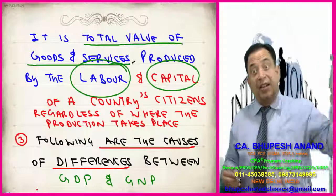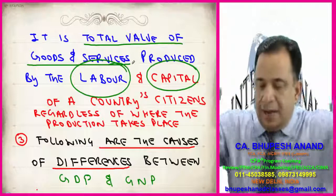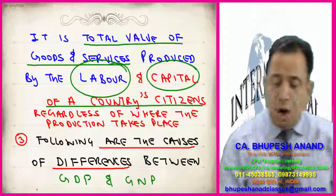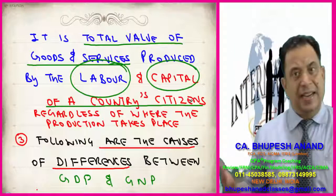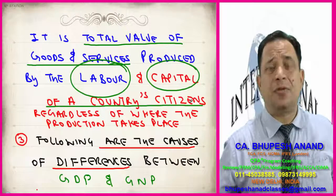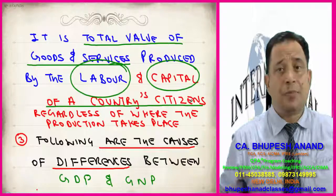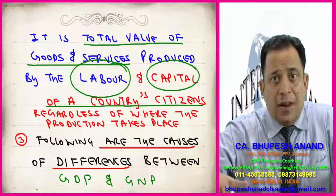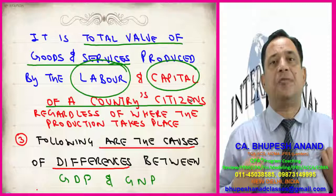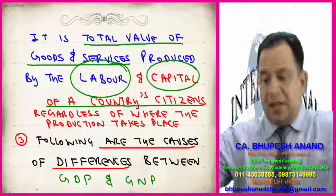Whether that labor is working in India or outside India hardly matters. The point is it should be produced by the labor and capital of the country, regardless of where the production takes place. If Indian citizens are constructing a dam in Israel, that should be considered income of India. No doubt it was not produced within the boundaries of India, but it has to be income because IMF and World Bank will be giving income for construction of dams, bridges, and airports outside India. So gross national product is a broader concept.